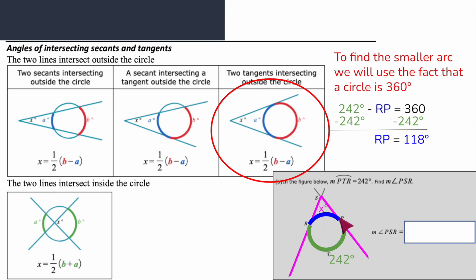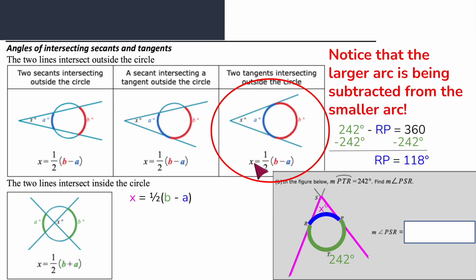Remember that's not the answer - I just needed to know both arcs to fill in my formula. Now I'm going to fill in my formula: X equals one half times the larger arc minus the smaller arc, so 242 minus 118, and then I'll divide by two to know what my angle is. The angle here has to be 62 degrees.